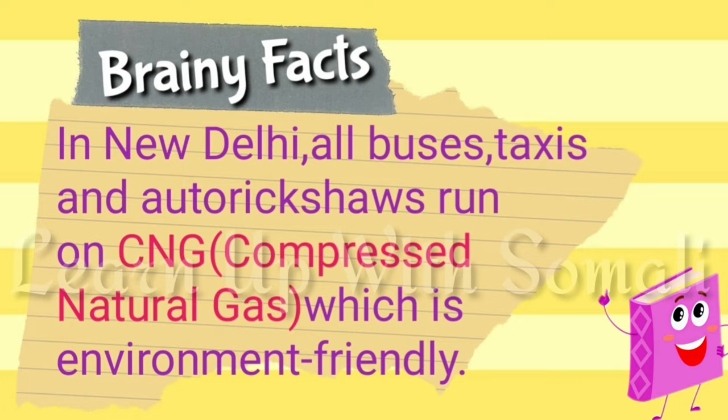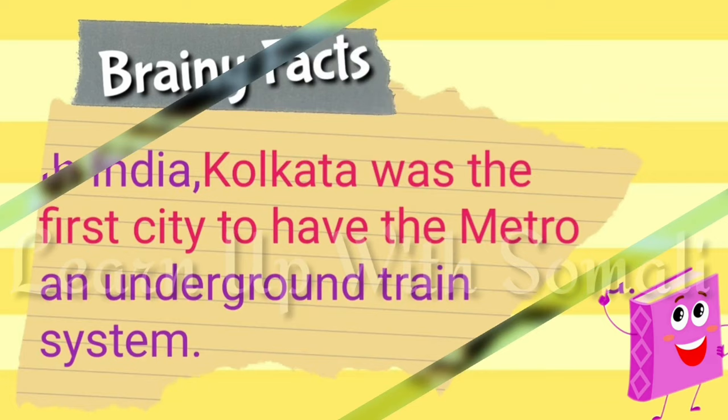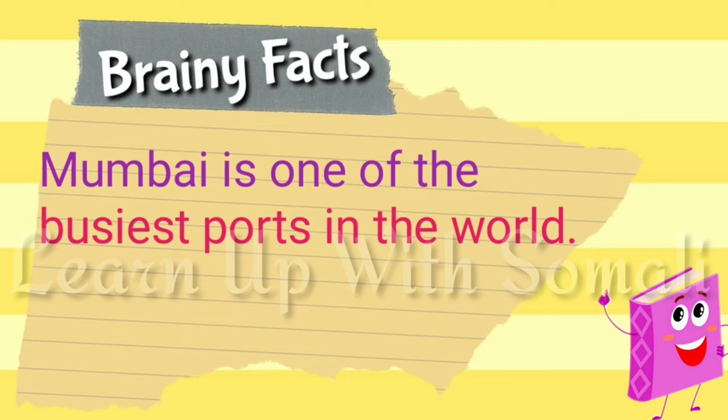India has the fourth largest railway network in the world, behind the USA, China, and Russia. In India, Kolkata was the first city to have the metro and underground train system. Mumbai is one of the busiest seaports in the world.